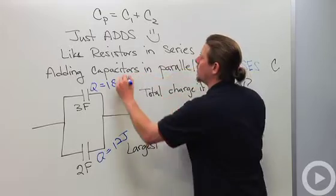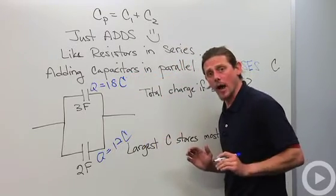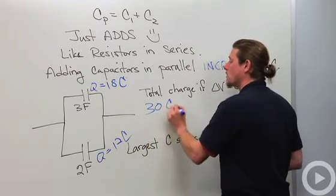So the total amount, I'm sorry, not joules, coulombs. So the total amount of charge that I'm going to hold is 18 plus 12, which is 30 coulombs.